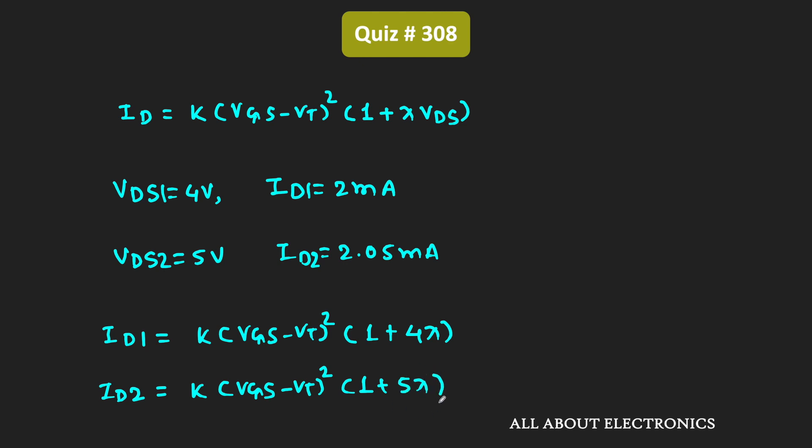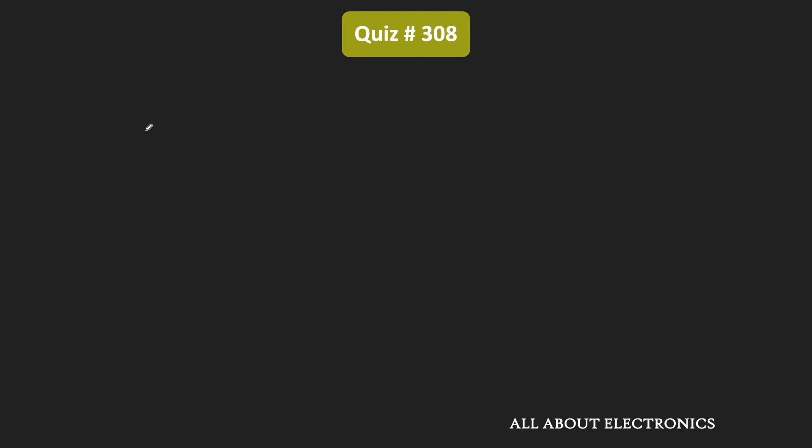So to find the value of this lambda, let's take the ratio of these two equations. That means Id1 divided by Id2 is equal to (1 + 4λ) divided by (1 + 5λ).